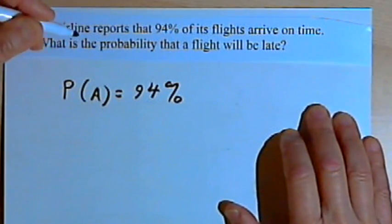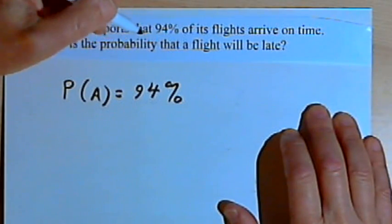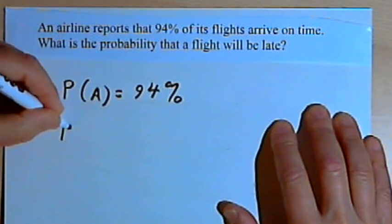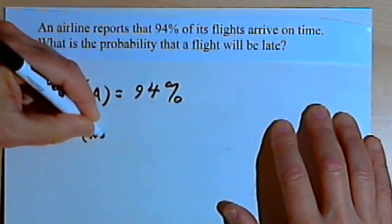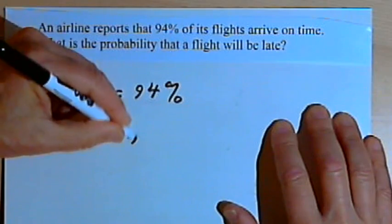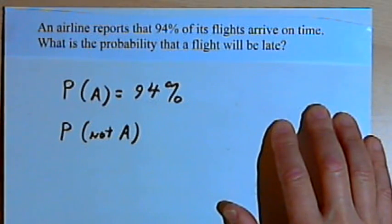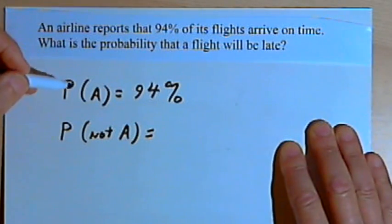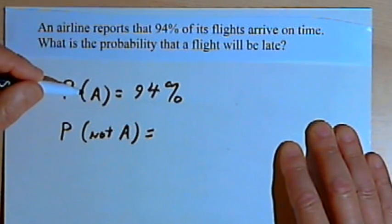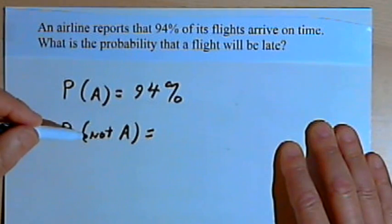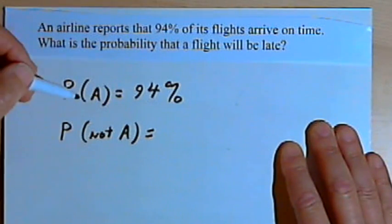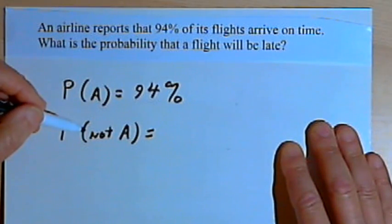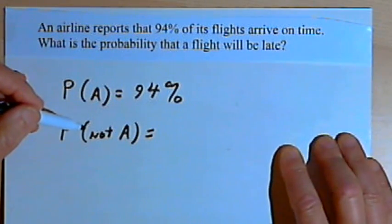I want to find the probability that a flight will be late — the probability of not arriving on time, or the probability of not A. Now, there are only two things that can happen: a plane can arrive on time, or it cannot arrive on time. Since those are the only two events, if I add those two events together, I'm going to get 100%.